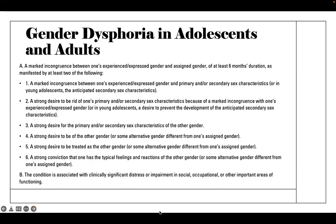Gender dysphoria in adults and adolescents: a marked incongruence between one's expressed or experienced gender and assigned gender of at least six months' duration, manifested by at least two of the listed criteria, accompanied with clinically significant distress or impairment in social, occupational, or other important areas of functioning.